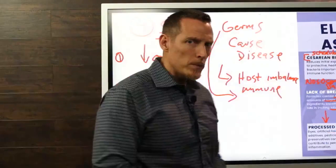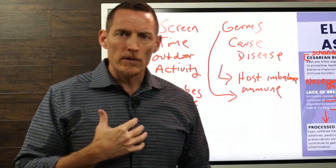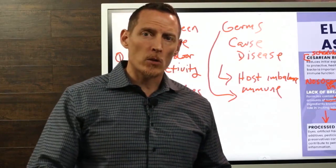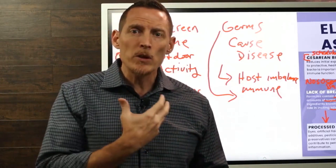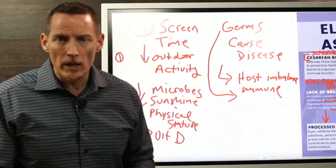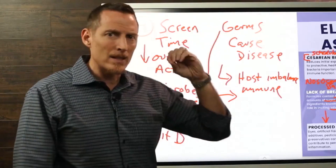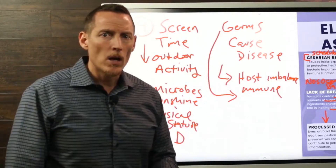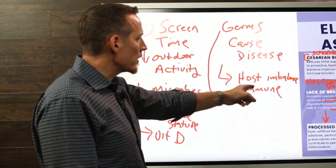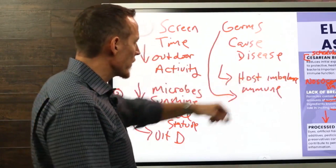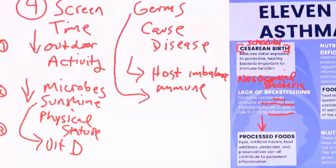If I took a thousand babies and swabbed their throats, we'd inevitably find staph and strep — but in the vast majority of healthy babies we wouldn't see an infection, even though the bacteria that set the stage for infection would be present. The presence of the germ doesn't guarantee the presence of illness. Germs take advantage of a weakened host immune system. This concept is referred to in science as terrain theory — the terrain of your body's health is more important than whether a germ is present.